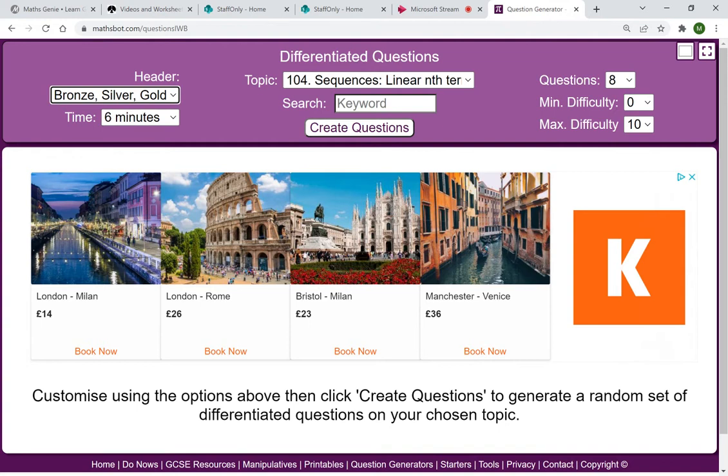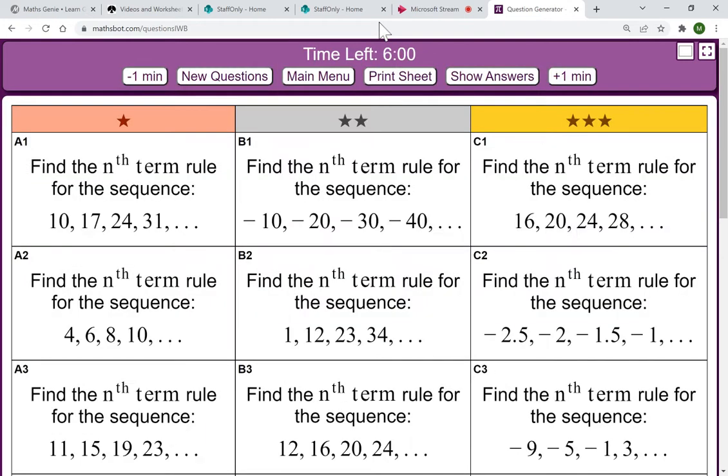If you really want to change from bronze, silver, gold, you can have green, amber, red or red, amber, green, depending on where you put your difficulties. I like to have bronze, silver, gold. And then your difficulties are really important. You have to get used to these. You have to start learning how these work. Obviously, the higher the number, the harder the difficulty. And then hit create questions.